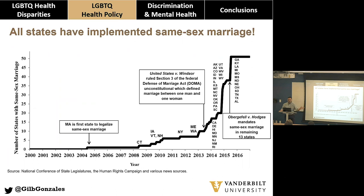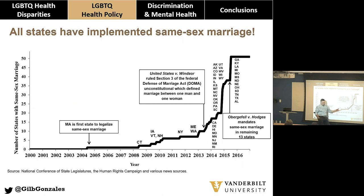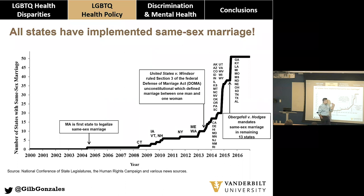Here's the rollout of marriage equality across the country. Massachusetts was the first state to legalize same-sex marriage in 2004. You can see states trickle in — New York adopted marriage equality in 2011 through the state legislature, Iowa through the state Supreme Court. In 2013, U.S. v. Windsor ruled that Section 3 of the Federal Defense of Marriage Act was unconstitutional. DOMA defined marriage as between one man and one woman — Bill Clinton signed DOMA into law.